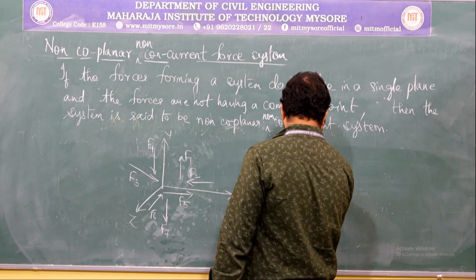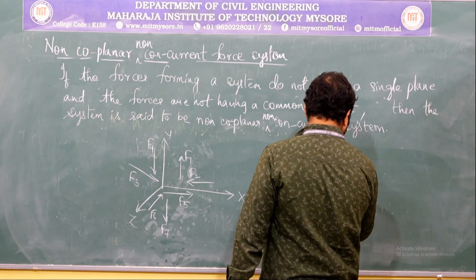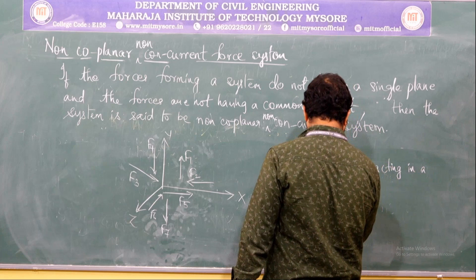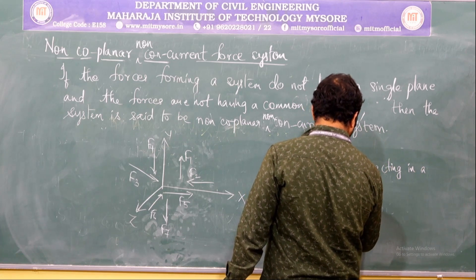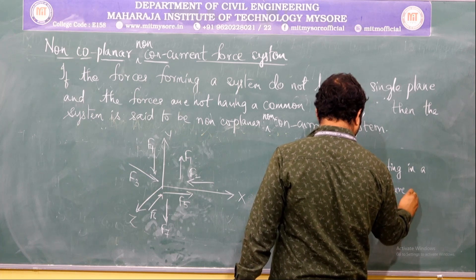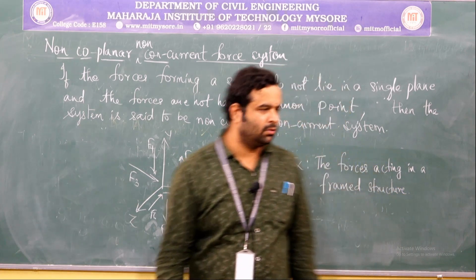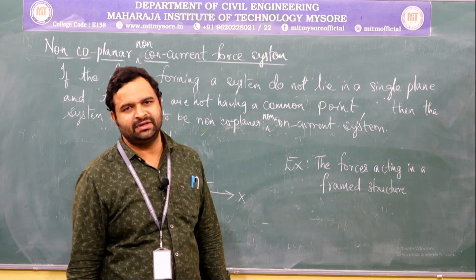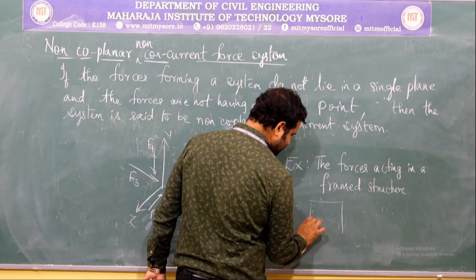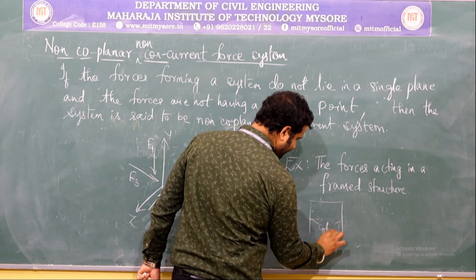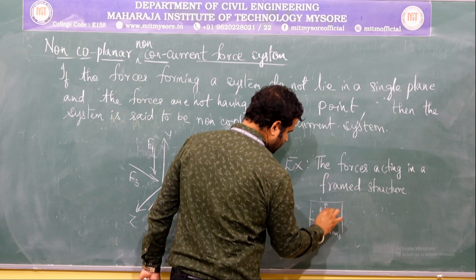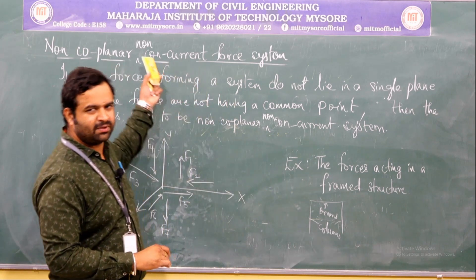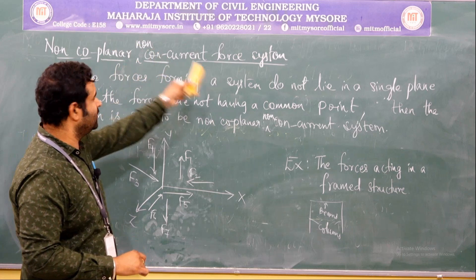An example for this is the forces acting in a framed structure. A framed structure is one consisting of columns and beams. If you take this as an example — these are the columns and this is a beam — the forces acting on this particular framed structure can be taken as a best example for the non-coplanar non-concurrent force system.